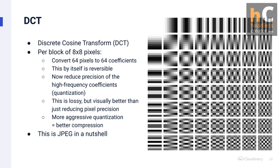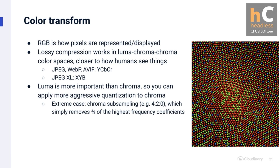For color images, JPEG uses a representation that separates the signal into a grayscale version called luma and two color components called chroma. Luma is more important than chroma, so you can apply more aggressive quantization to the chroma. In an extreme case, you can throw away all high-frequency chroma coefficients — that's called chroma subsampling. In general, applying more aggressive quantization to chroma than luma preserves the grayscale version of the image better than the color information, which corresponds to how the human visual system also works.